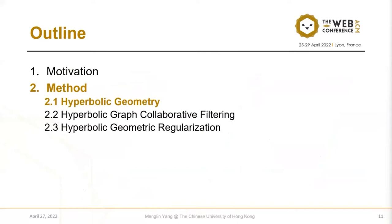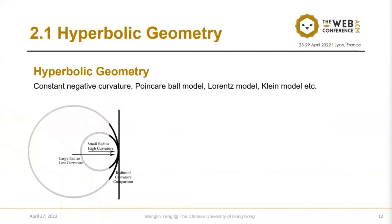I will now introduce some necessary concepts about hyperbolic geometry. Hyperbolic space is a curved space, described by its curvature, which demonstrates how much a geometric object deviates from a flat one. For example, a small radius indicates high curvature and a large radius indicates low curvature.